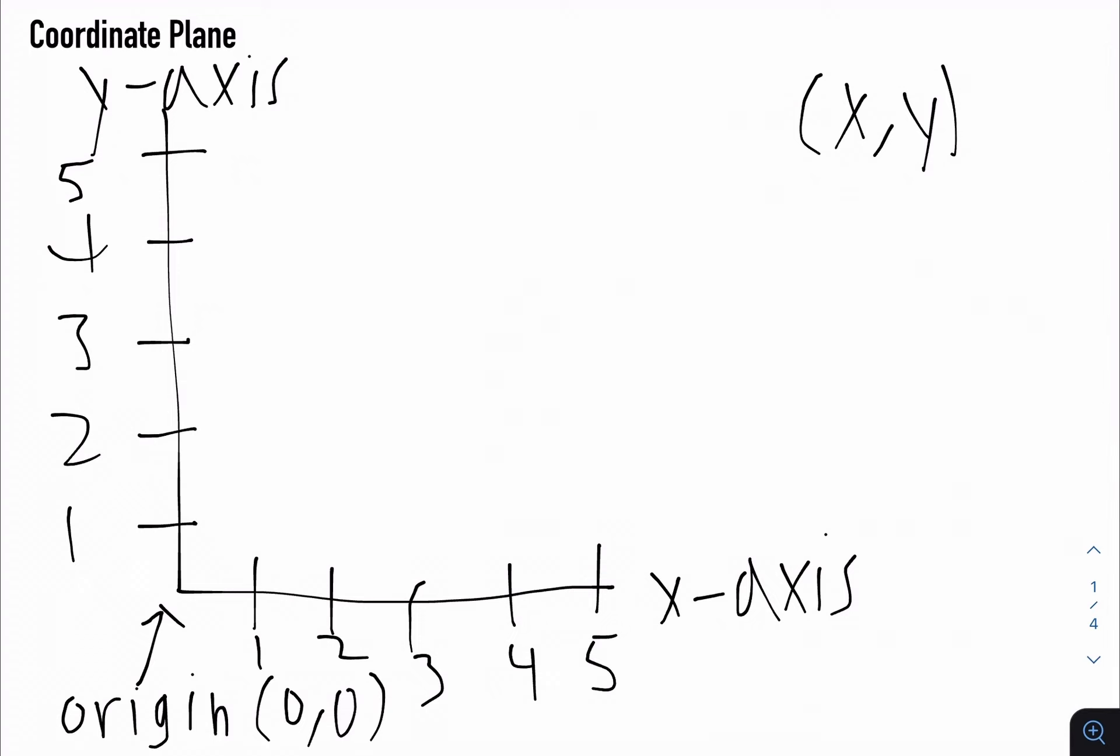So for example, if something is like (1, 2), it would be over here. Because the x-coordinate is 1, and the y-coordinate is 2.